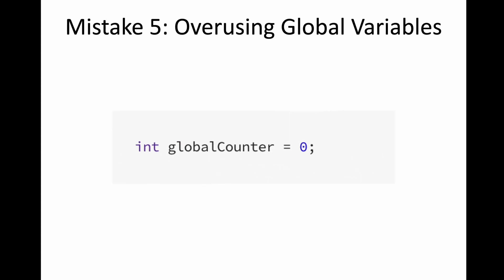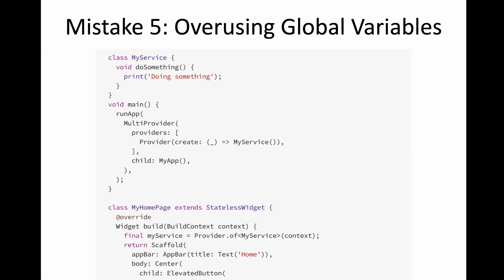Next, overusing global variables is a very bad idea. Rather than using global variables, you can use state management — in this case it could be Provider. Set up a Provider in your main and use the service of that Provider to call the necessary methods, so you don't have to overuse global state.